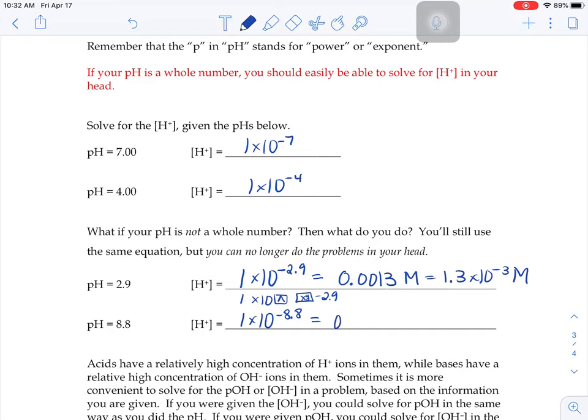1, 2, 3, 4, 5, 6, 7, 8 zeros, and then a 1.6 perhaps, or 1.6 times 10 to the negative 9th molar.